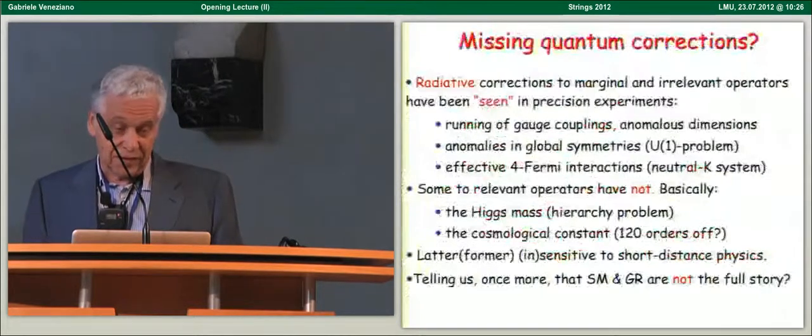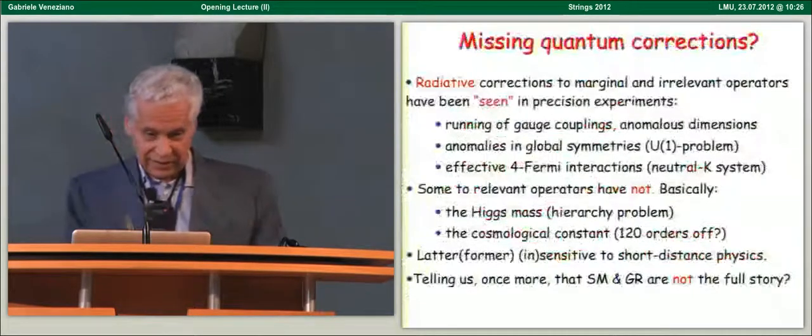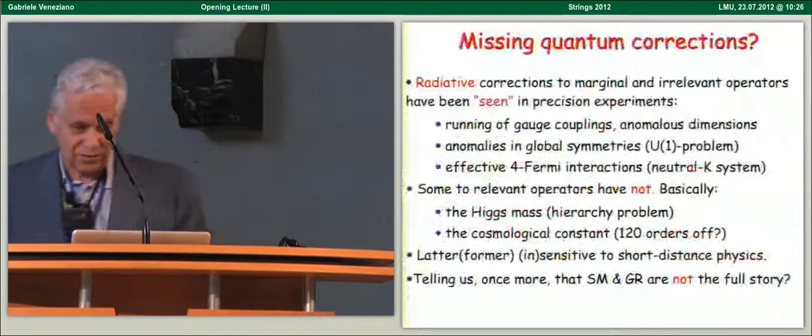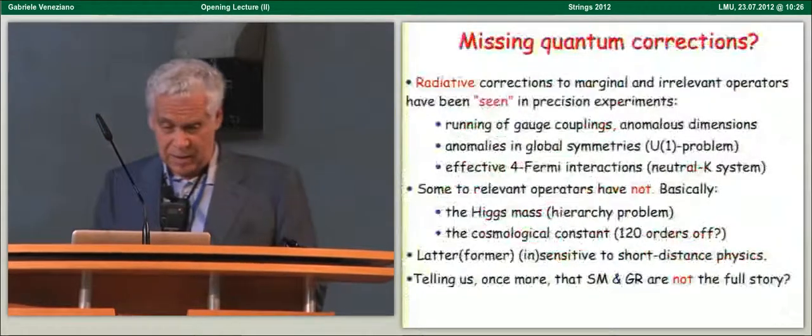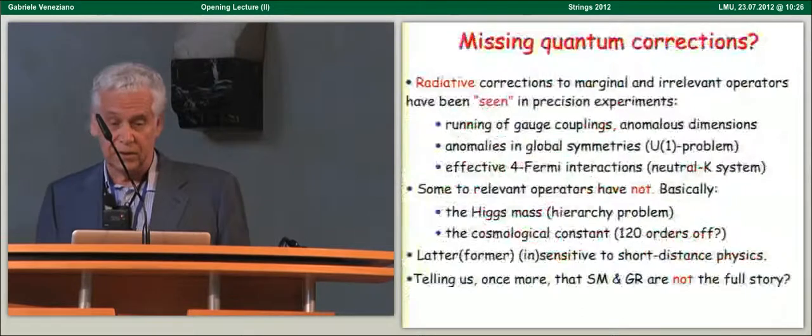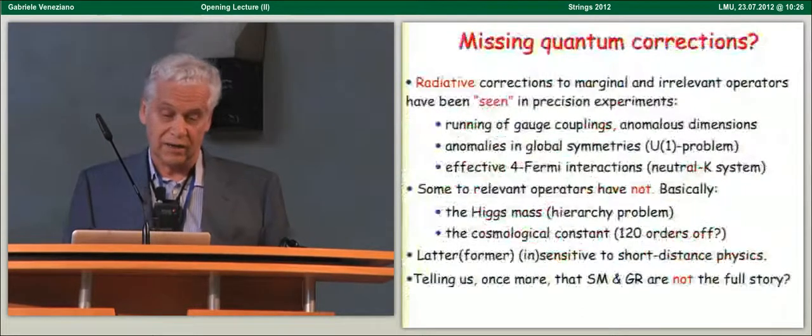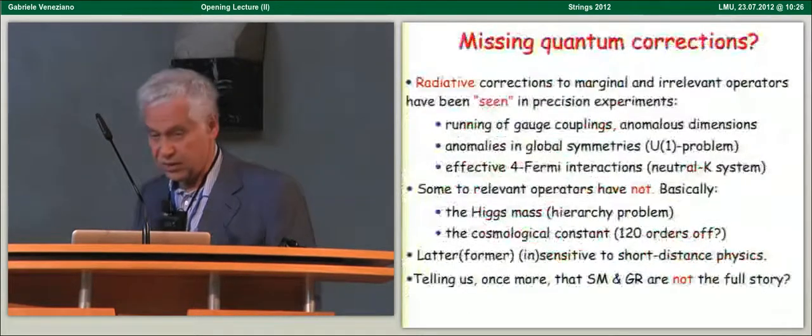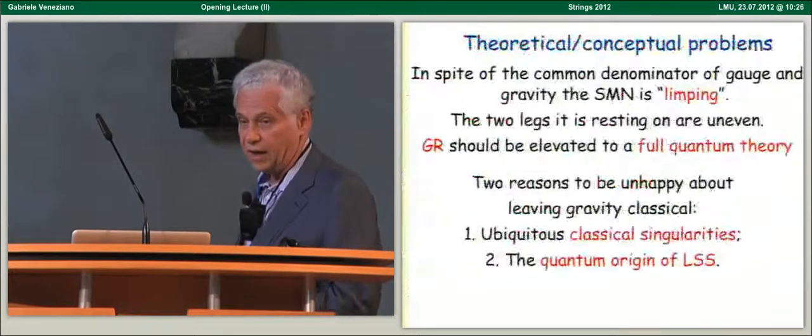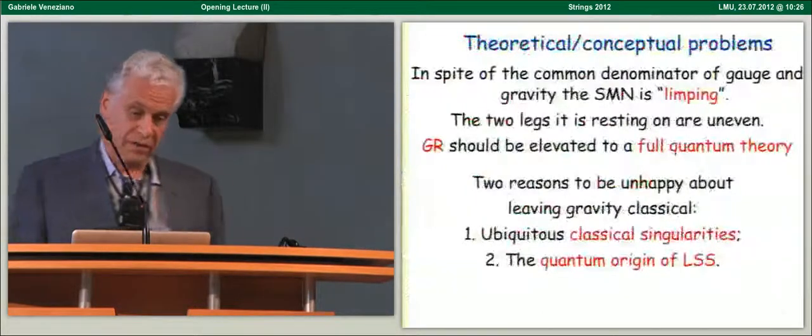Now, and I want to emphasize something which is trivially known, that the latter, the relevant operators, are sensitive to short-distance physics, while the former are insensitive. And so this, in my opinion, tells us that the standard model and GR cannot be the full story. It cannot be the full story. You need somehow something that tells you what happens at short distances.